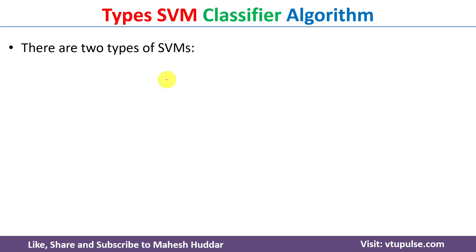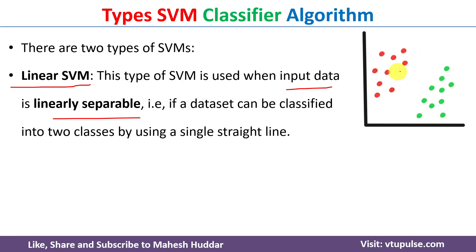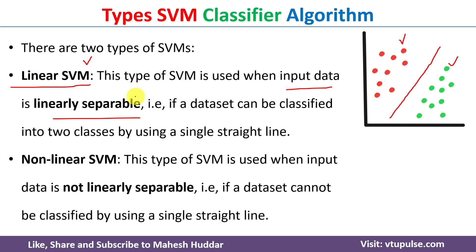Now we will discuss the different types of SVM classifiers. There are mainly two types. The first is known as linear SVM — whenever the input data is linearly separable we can use linear SVM. In this diagram the dataset contains two classes, one represented with red circles and another with green circles. We can draw a straight line to classify or divide this data into two classes. Whenever we have such data, we can apply linear SVM.